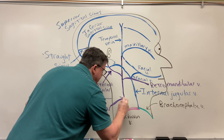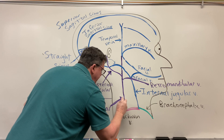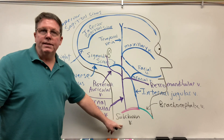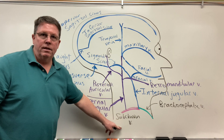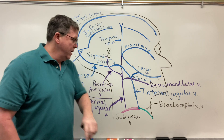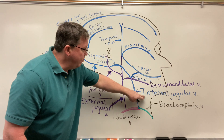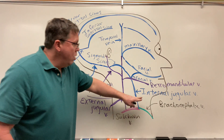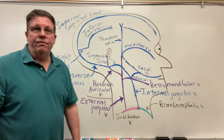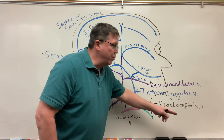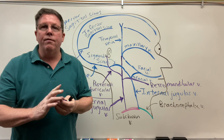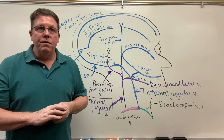My external jugular vein drains into my subclavian vein — remember, subclavian goes under the clavicle. Then the subclavian vein continues and meets with the internal jugular. When it meets with the internal jugular it becomes the brachiocephalic vein. My right and left brachiocephalic veins meet, form the superior vena cava, and drain into the right atrium.